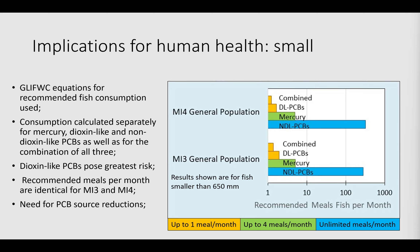We looked carefully at Glifwic's data, because here we had more samples collected in the same area and could be sure this pattern was real — that it wasn't a failure to collect a size spectrum of fish and adequately account for changes induced by fish growth and aging. We also measured additional fish, and in both cases we see the expected pattern of increasing contaminants with increasing fish size, the typical bioaccumulation pattern. There are significant differences, with the western side of the peninsula being higher, and that holds for concentrations at both low and high fish sizes.